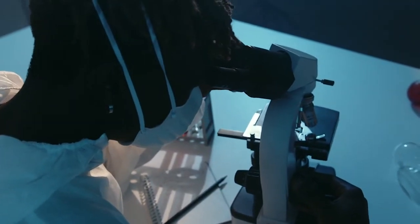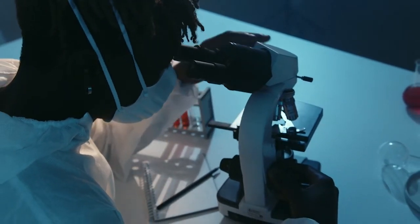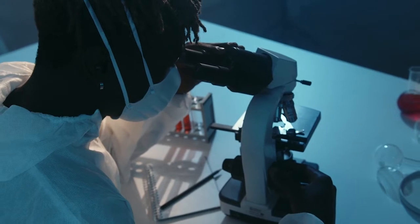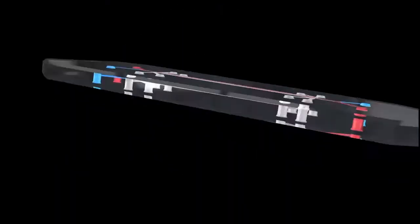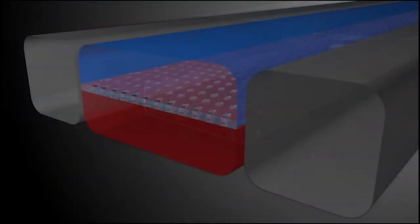Making organs on chips is like preparing a layer cake. Using micro-engineering techniques, scientists start by building a plastic mold with hollow channels. Once the mold hardens into a flexible transparent chip, it's time to add the ingredients.